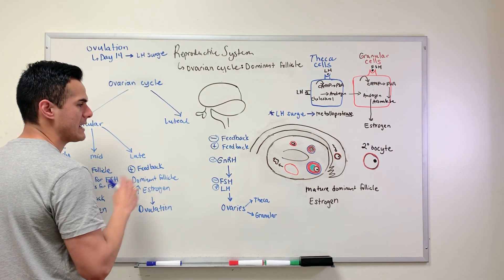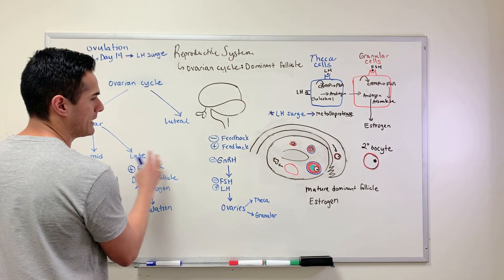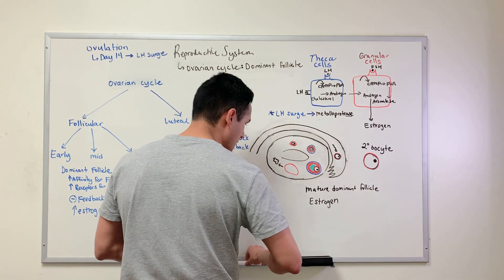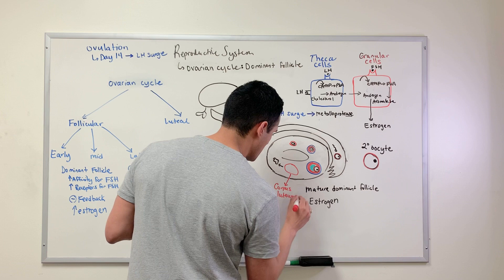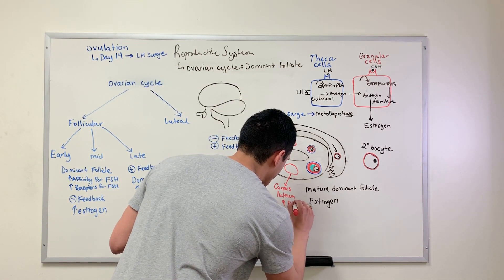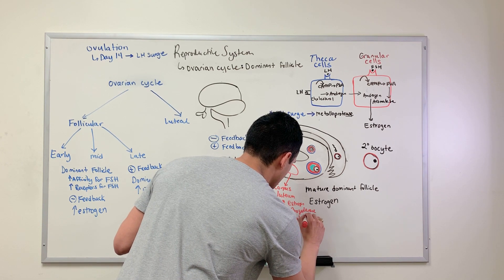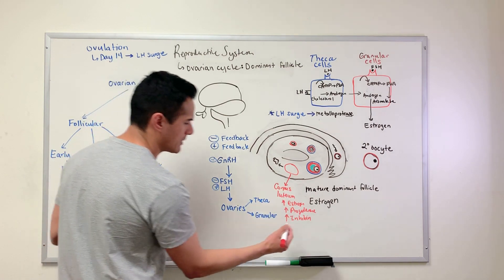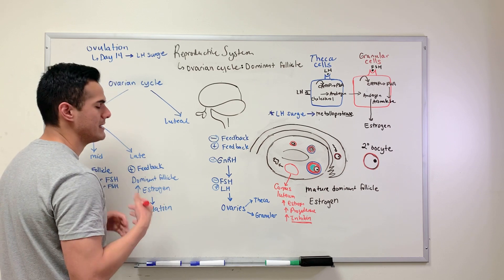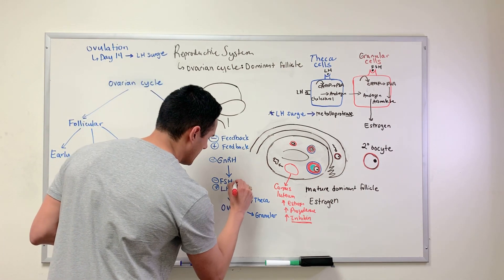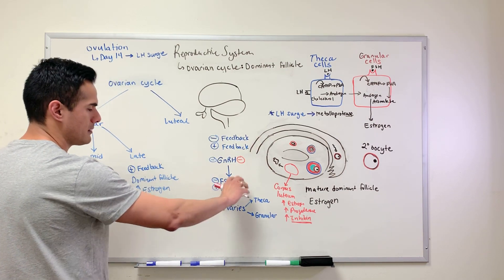Now that ovulation has happened, we need to discuss the last feedback mechanism. We've completed the follicular phase and we're moving on to the luteal phase. This structure here is the corpus luteum. What the corpus luteum secretes is increasing levels of estrogen, increasing levels of progesterone, and increasing levels of inhibin. Because the corpus luteum is secreting inhibin, the effect is a negative feedback mechanism — we're going to inhibit the releasing hormone, which also inhibits the release of these tropic hormones.